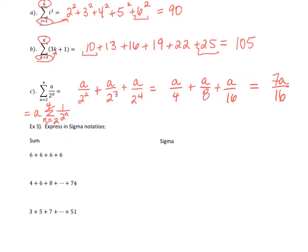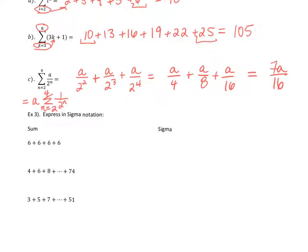Now we're going to go backwards. Put this on pause and come up with a sigma formula for each of these three sums. I'll point out that there's more than one way to do this correctly, so if your answer doesn't match mine, it doesn't mean yours is wrong. There are many different ways to write these.